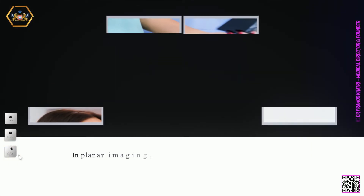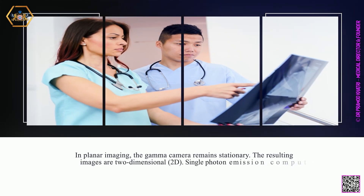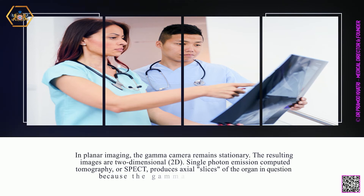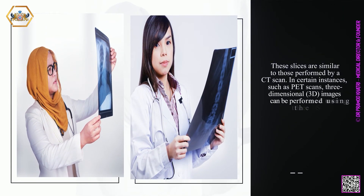In planar imaging, the gamma camera remains stationary, and the resulting images are two-dimensional (2D). Single photon emission computed tomography, or SPECT, produces axial slices of the organ in question because the gamma camera rotates around the patient. These slices are similar to those performed by CT scan. In certain instances, such as PET scans, three-dimensional (3D) images can be performed using the SPECT data.